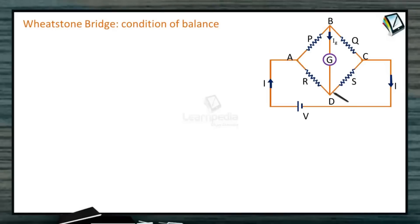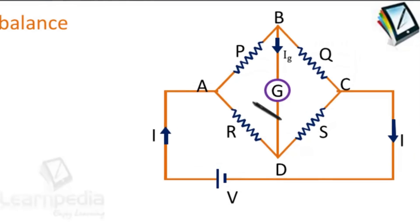Let us study about Wheatstone Bridge and Condition of Balance. This is an arrangement of four resistances, P, Q, R, and S, and a galvanometer is connected to the unknown resistances. This arrangement of resistances we call as Wheatstone Bridge.